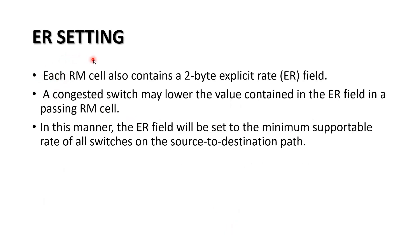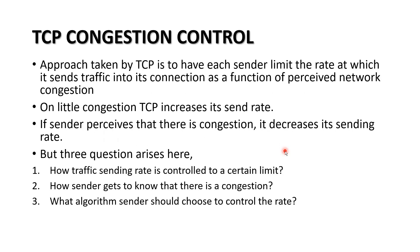ER setting stands for explicit rate setting field. It contains a 2-byte explicit rate field. A congested switch may lower the value in the ER field in a passing RM cell, so the ER field will be set to the minimum supportable rate of all switches on the source-to-destination path. In the next video, we will discuss TCP congestion control techniques. Thank you.